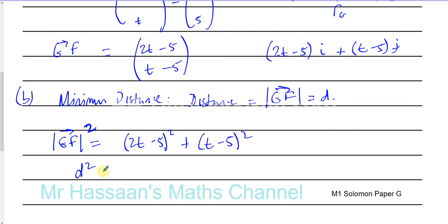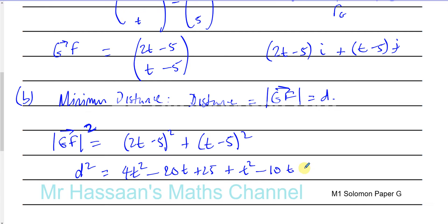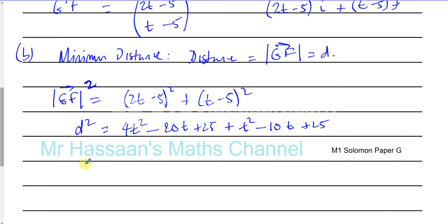So D squared equals — expanding this — 4t² minus 20t plus 25 plus t² minus 10t plus 25. If we simplify that, D squared equals 5t² minus 30t plus 50.